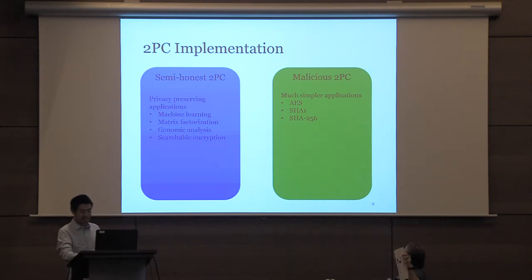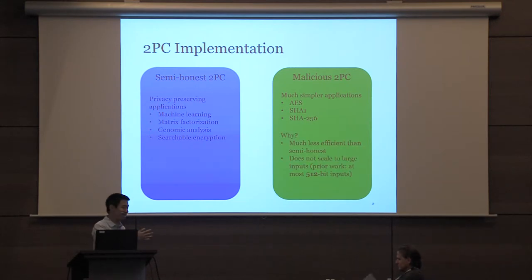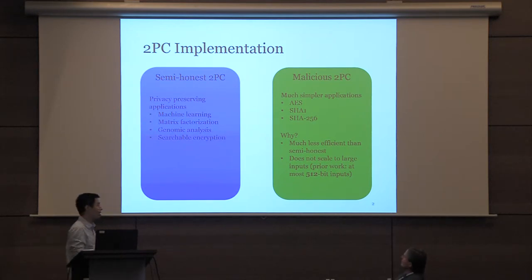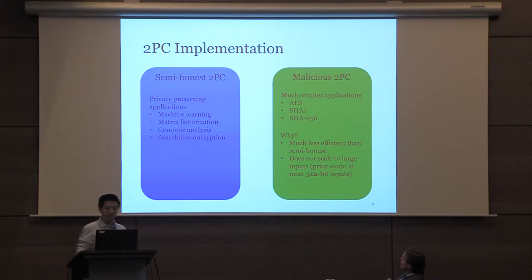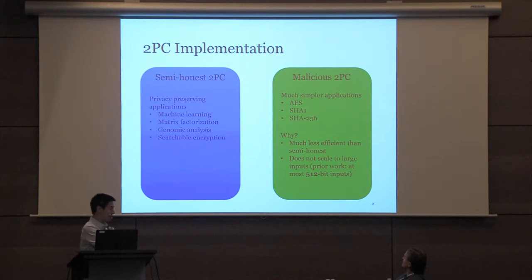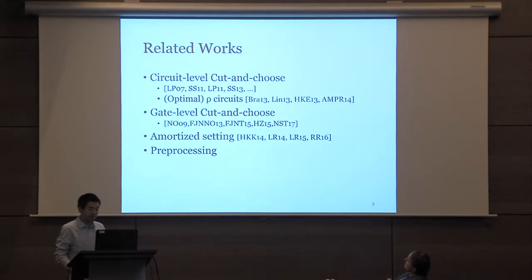So why is this the case? We can summarize it in two points. On the one hand, malicious 2PC is much slower and much less efficient. On the other hand, it's very hard to scale to large input, and according to our experience, when we directly scale it to large input, it becomes much, much slower. In this work, we want to partially address these two points.